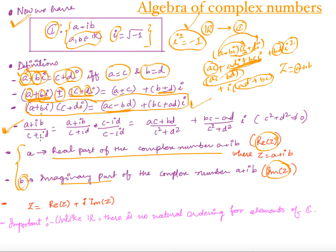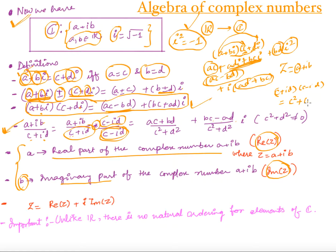To divide two complex numbers, we rationalize. For (a + iota b) divided by (c + iota d), multiply numerator and denominator by (c minus iota d). The numerator becomes (ac + bd) plus (bc minus ad)·iota. The denominator, using the difference-of-squares formula, becomes c² plus d². So the result has real part (ac+bd)/(c²+d²) and imaginary part (bc−ad)/(c²+d²), provided c² plus d² is not zero.